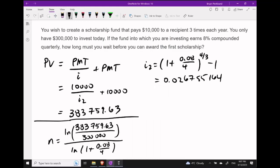This brings us to the second part of the question. We need to apply the formula for N for typical compound interest. In other words, we want to figure out how long it will take $300,000 to grow to $383,759.63 at the rate of 8% compounded quarterly. I'm taking the logarithm of the future value over the present value, then dividing by the logarithm of 1 plus i.